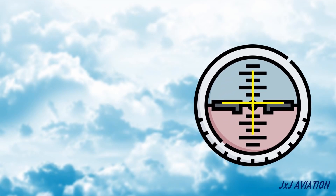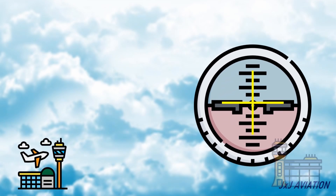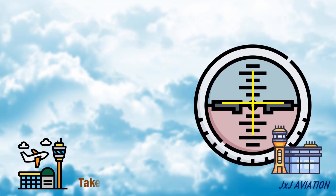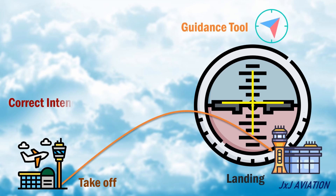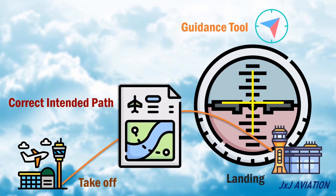The flight directors are used from takeoff till landing. It is a guidance tool which ensures the aircraft follows the correct intended path, as per the flight plan, or as per inputs given by the pilot. That's all for my video on the flight directors.